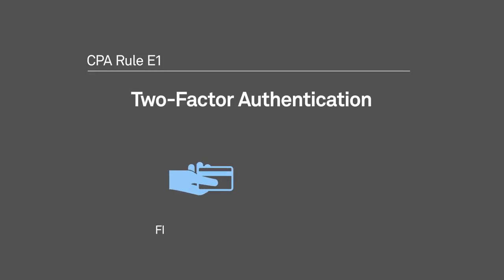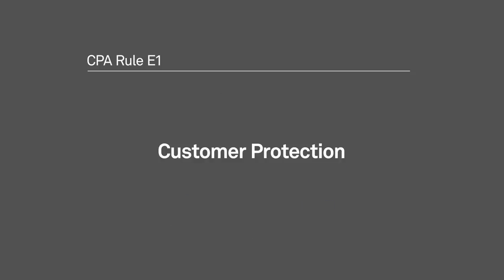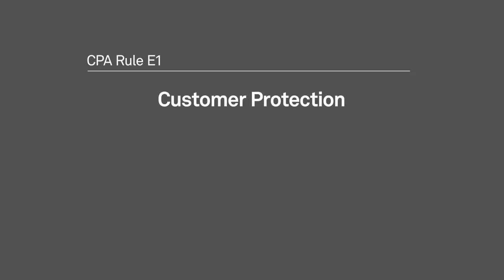The key requirement for PIN-based POS payments is two-factor authentication — both an FI-issued debit card and a PIN are required for a transaction to proceed. These payments are made in real-time, authorized immediately over a network connection, and once approved, are final. Customer protection is a key element of this rule. When making a PIN-based POS payment, the customer must be provided with certain protections.